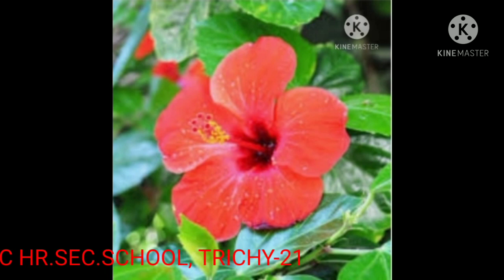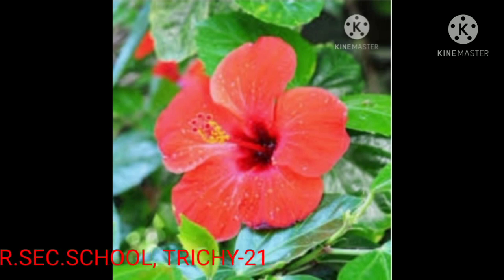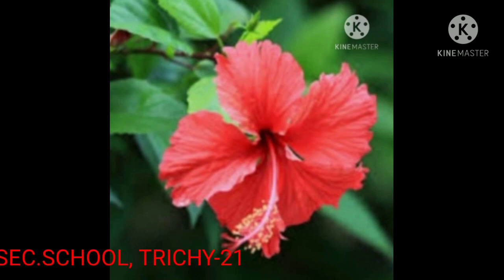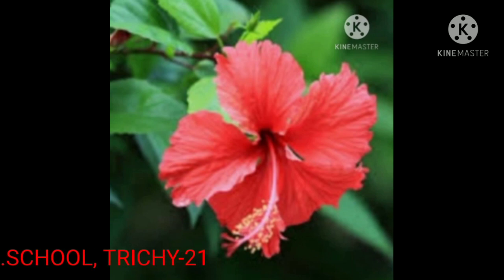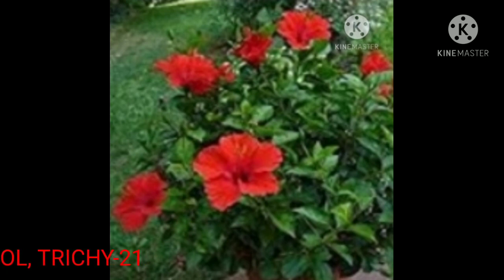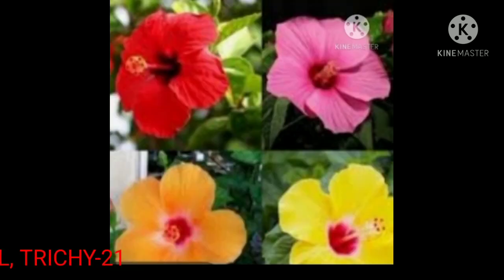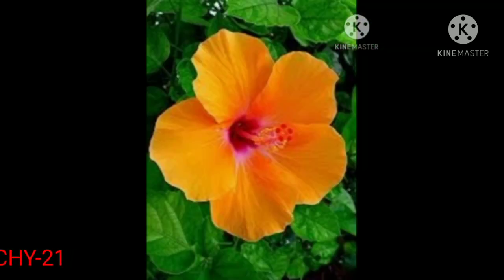Now look at this picture — this is a hibiscus. Hibiscus is commonly known in Asia as a shoe flower. Hibiscus are large, trumpet-shaped flowers. They grow in the form of a bush or a small tree. Hibiscus comes in many colors like red, white, yellow, pink, etc. It has five petals — shall we count? One, two, three, four, five — five petals.